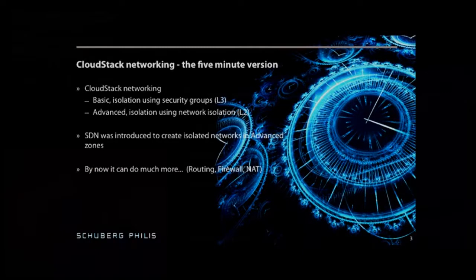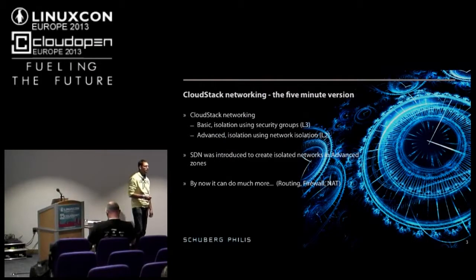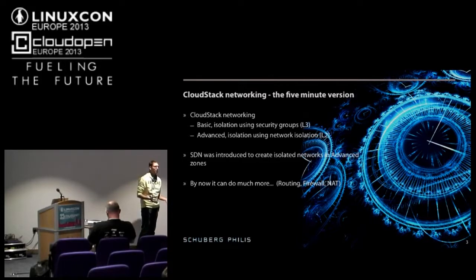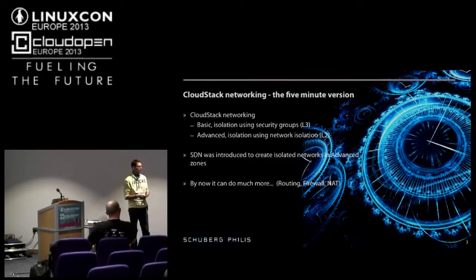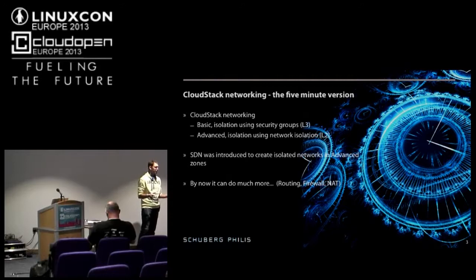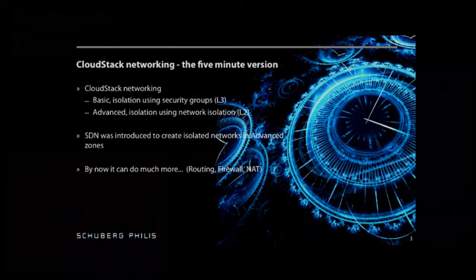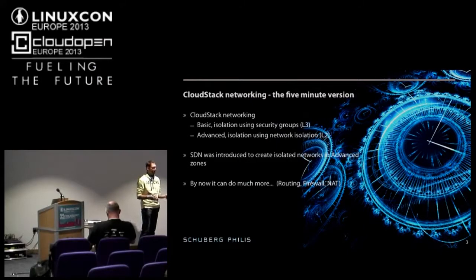CloudStack can basically function in two different ways when you purely look at the networking perspective. There's basic networking, where isolation is done using security groups. This model is the typical model from the Amazon-style cloud — everything in a big broadcast domain, you secure your machines using security groups. It's fairly easy, open, transparent, and there are some hacks involved to make it really secure. It's a flat network and you are most often directly connected to the internet.